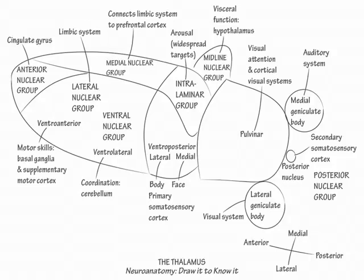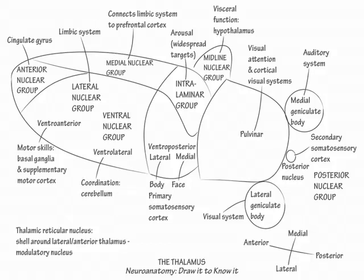Lastly, write out that the thalamic reticular nucleus forms a shell around the thalamus and indicate that it is a diffuse modulatory nucleus that communicates widely with the thalamus and cerebral cortex. If we were to draw the thalamic reticular nucleus, we would obstruct the view of the rest of the thalamus. This concludes our drawing of the thalamus.